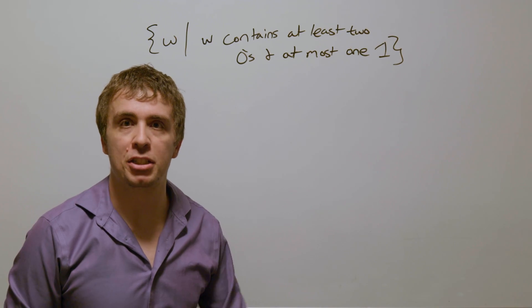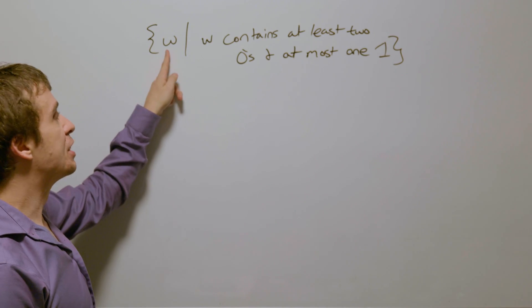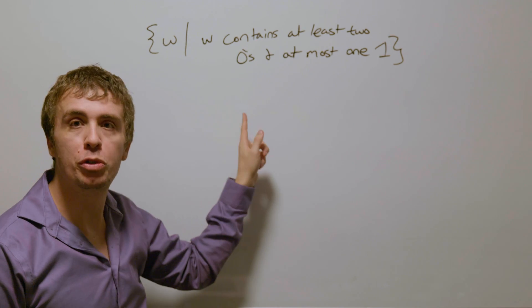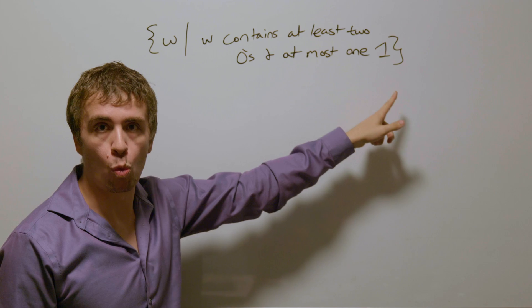Okay, let's make a deterministic finite automaton for this language, which is the set of all binary strings w, where w contains at least two zeros and at most one one.